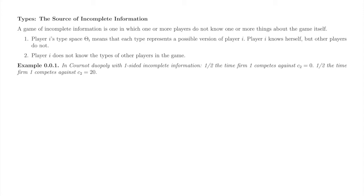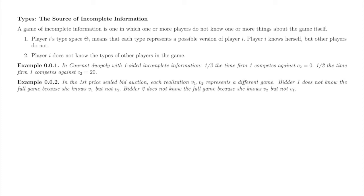In Cournot duopoly with one-sided incomplete information, Firm 1 knows it has a competitor, but it does not know which one. Half the time, Firm 1 plays Cournot duopoly against a competitor with C2 equals 0. The other half of the time, Firm 1 plays Cournot duopoly against a competitor with C2 equals 20. Firm 1 does not know which game it is playing, but it does know the probability distribution of Firm 2's types. In the first-price sealed bid auction, neither bidder knows the type of the other. Each bidder knows her own valuation and the distribution of the other bidder's valuation.